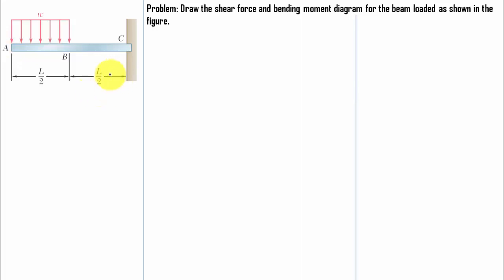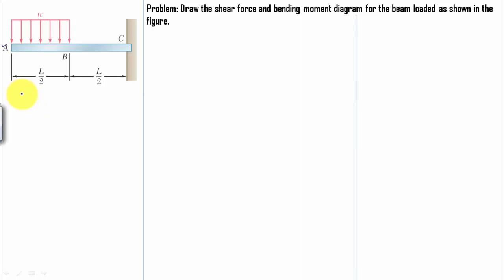To begin, let me give you a tip: whenever you're dealing with problems based on cantilever beams, always take the section from the free end. Point A over here represents the free end, so we're going to take this section from the left-hand side. Whenever you take the section from the left, shear force is downwards and bending moment is anti-clockwise.